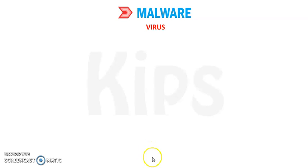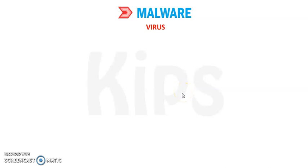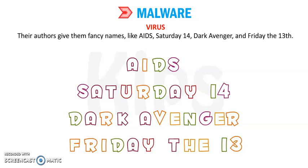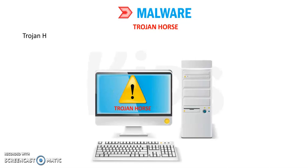A virus spreads from machine to machine in a number of ways: if you boot a PC from an infected medium, if you execute an infected program, if you open an infected file, if you open an infected email attachment, or exchange files via pen drive and other media, or through pirated software. Their authors give them fancy names like Saturday 14th, Scavengers, and Friday the 13th. These attractive names attract users to open them, which is how they enter our computers.